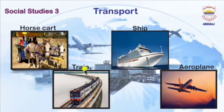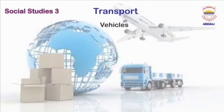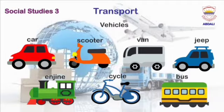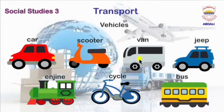Examples of transport include horse cart, train, ship, aeroplane, and so on. Vehicles are machines which take us from one place to another on land. Some examples are car, scooter, van, Jeep, engine, cycle, and bus.